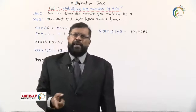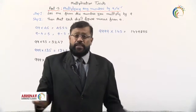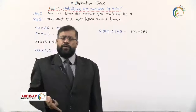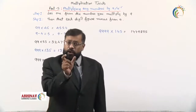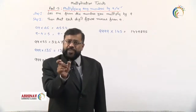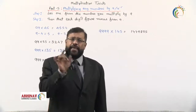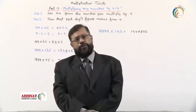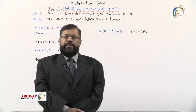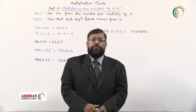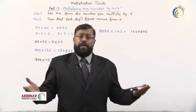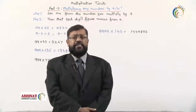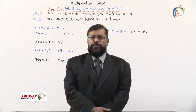So when multiplying any number by 9, 99, 999, and so on, the trick is: subtract 1 from the number being multiplied, then subtract each digit of the result from 9. That gives you the answer. In this session we completed Part 5 of the multiplication tricks. In the next session we shall start Part 6. Thank you.